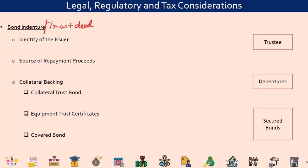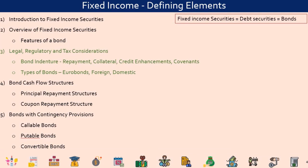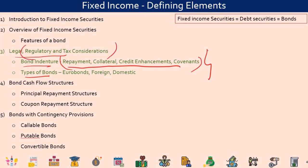The next topic in this reading is going to cover the legal, regulatory, and tax considerations. This is very important both from the point of view of the issuer as well as a bondholder. Here we are looking to cover bond indentures and types of bonds, and these are the key elements that are present in a bond indenture.